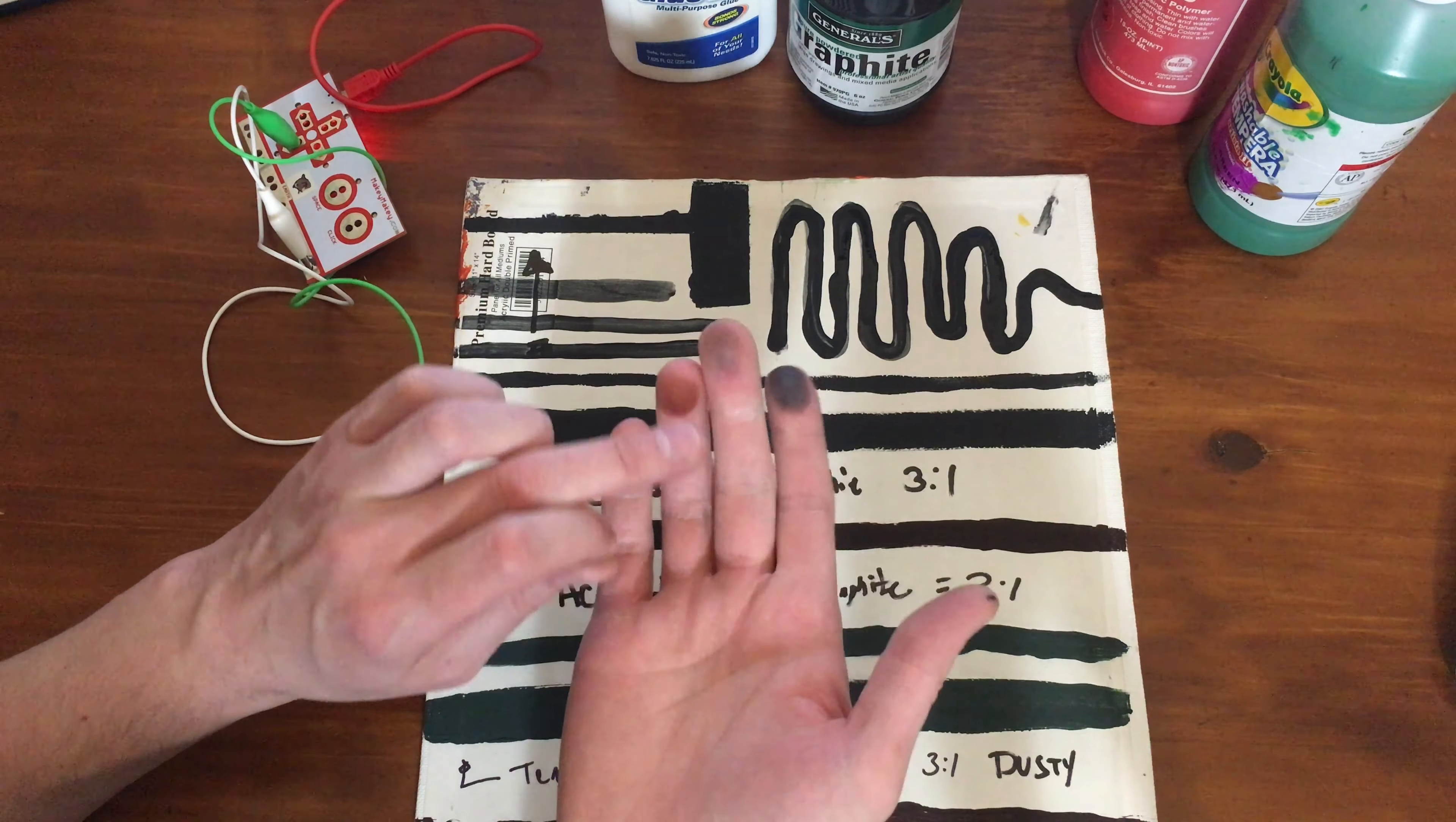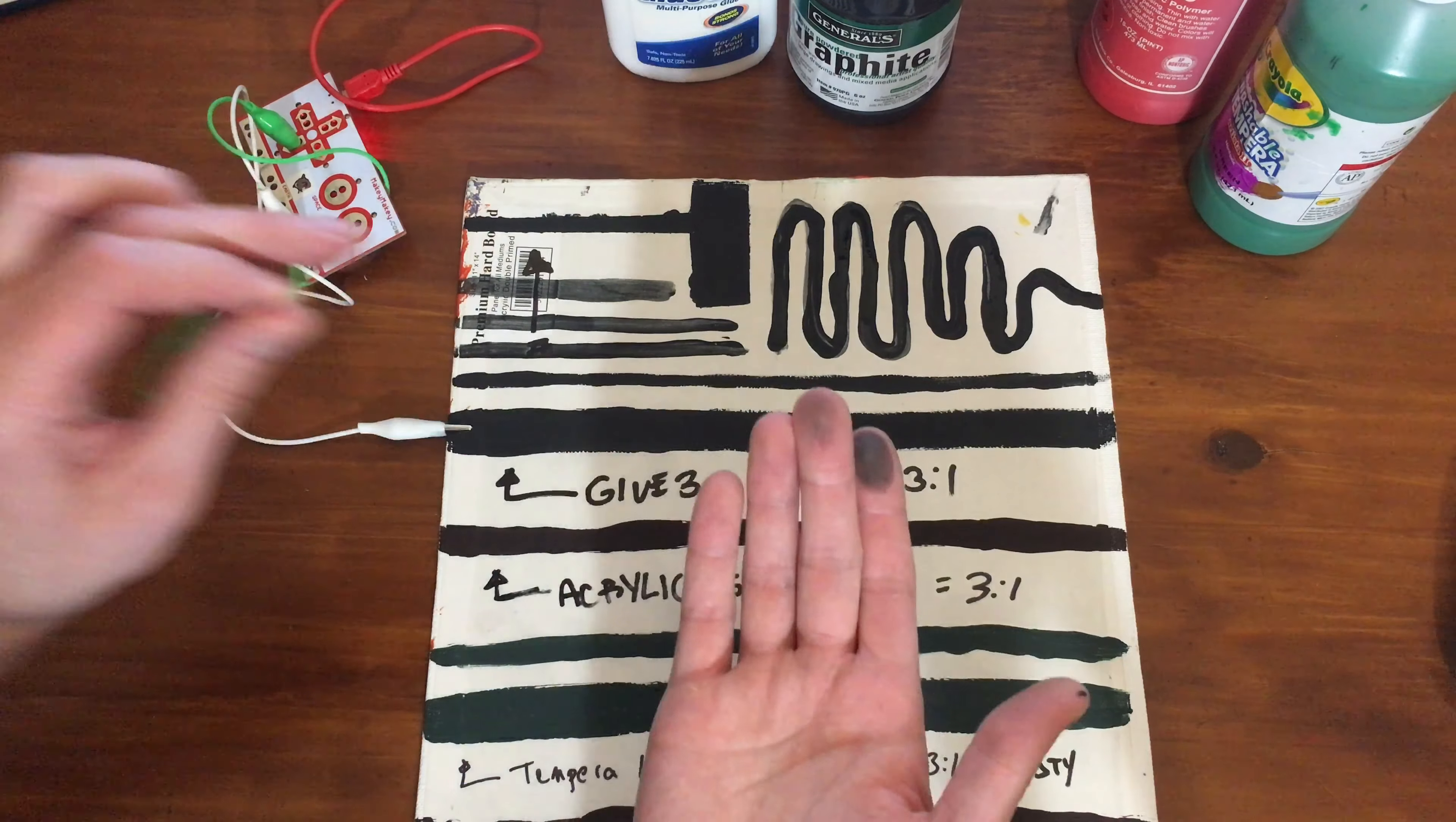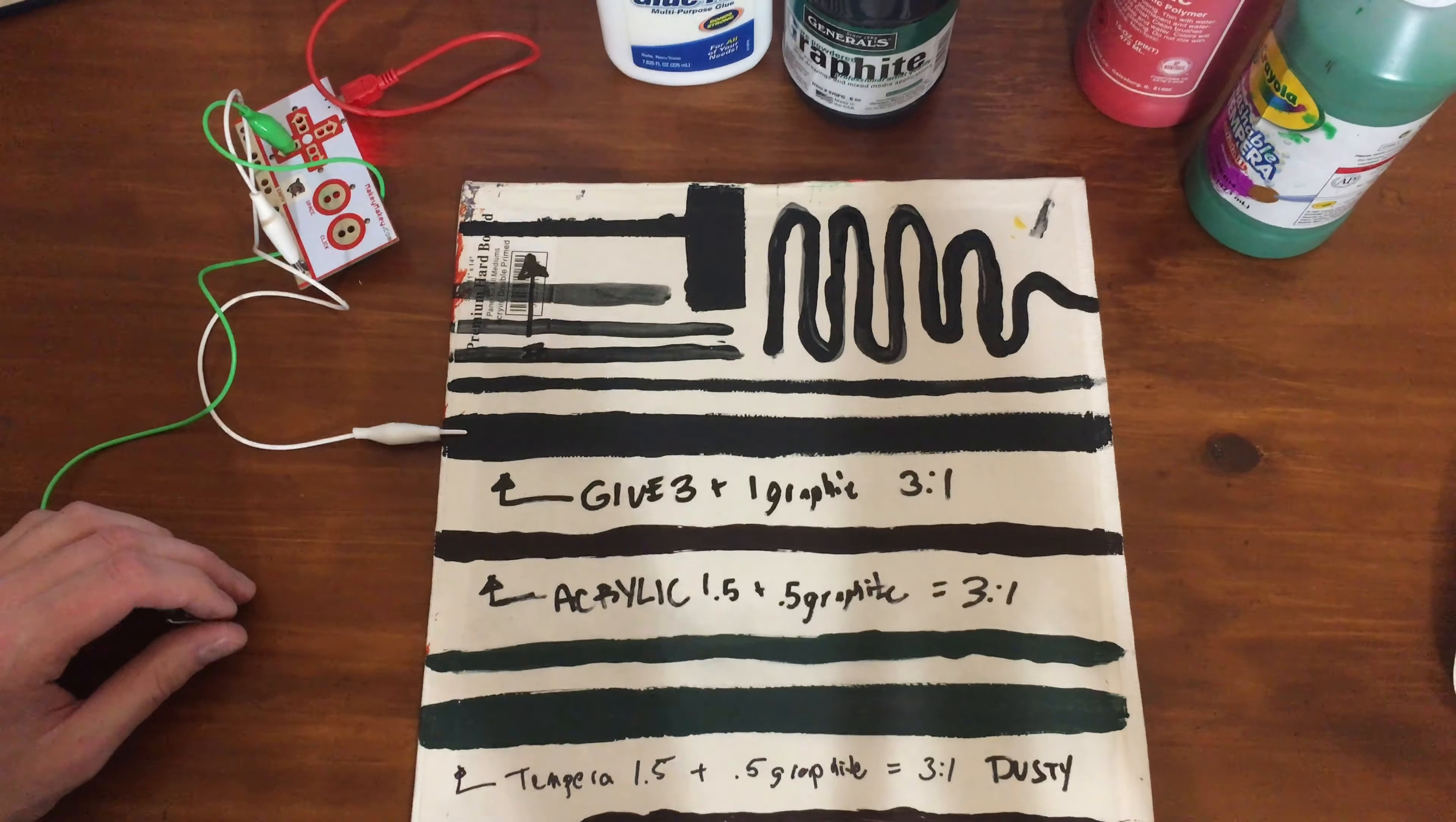So this is the tempera, rubbing back and forth, and this is the glue, which is much better. Alright, that's it.